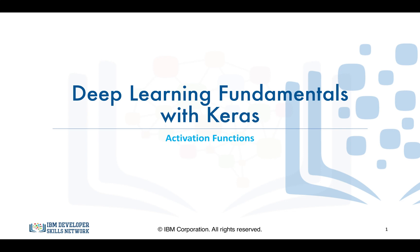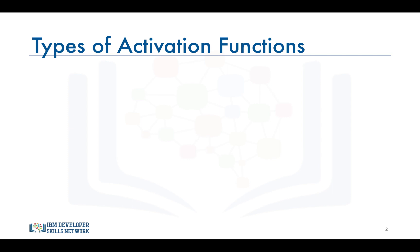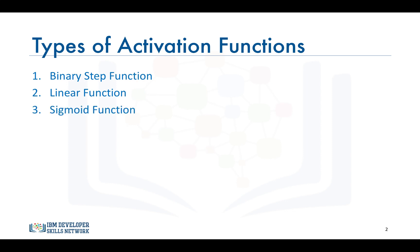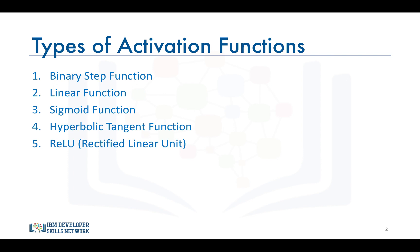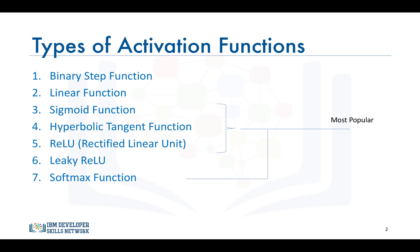There are seven types of activation functions that you can use when building a neural network: the binary step function, the linear or identity function, the sigmoid or logistic function, the hyperbolic tangent or tanh function, the rectified linear unit (ReLU) function, the leaky ReLU function, and the softmax function. In this video we will discuss the popular ones, which are the sigmoid, the hyperbolic tangent, ReLU, and the softmax functions.